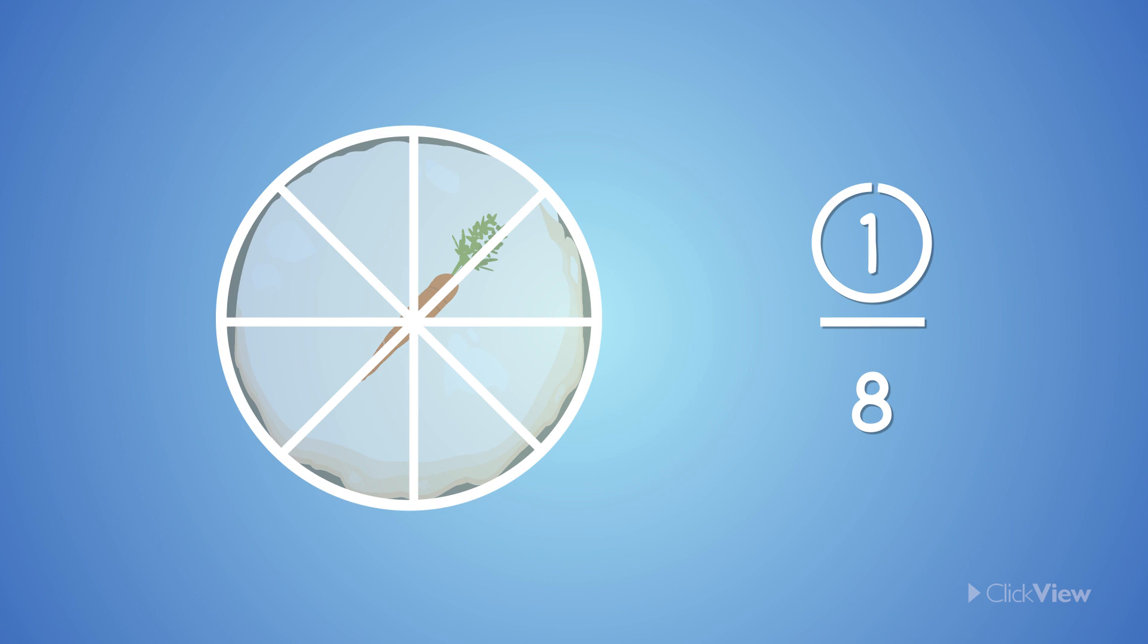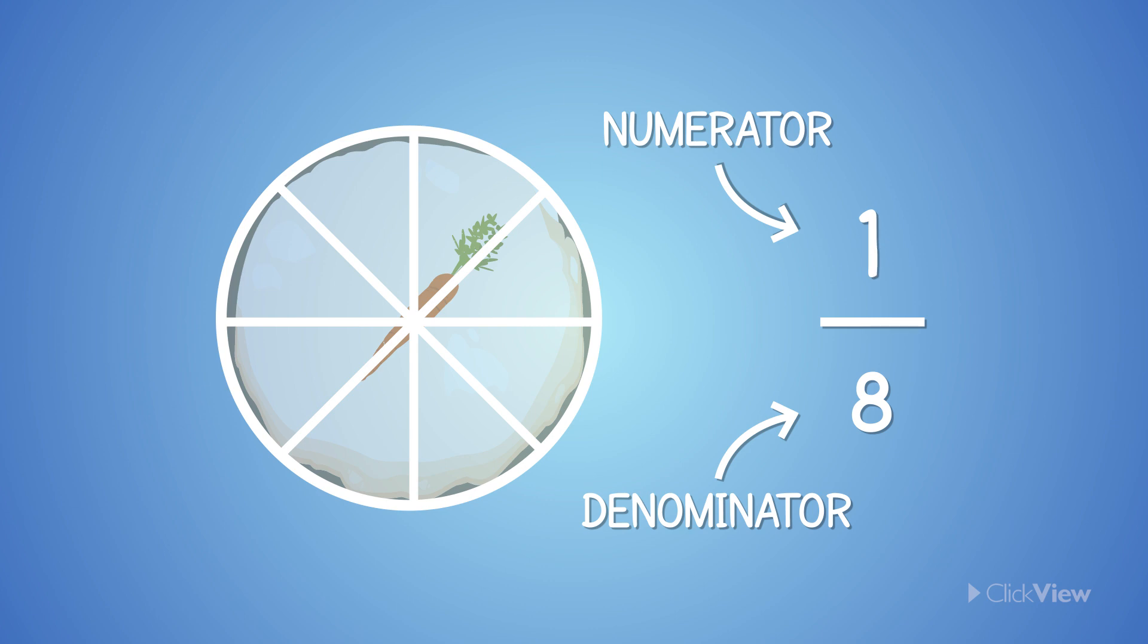So the total number of pieces that the cake was divided into was eight, which is the denominator. And the total number of parts Lily got was one, which is the numerator. We can write this yummy cake equation as one over eight. This is also known as one-eighth.